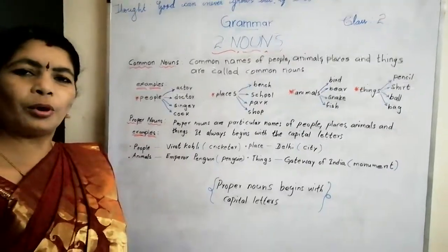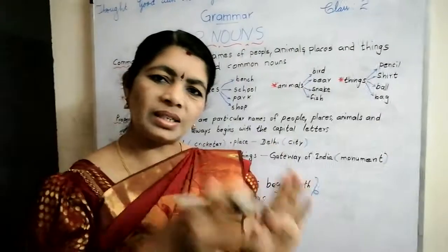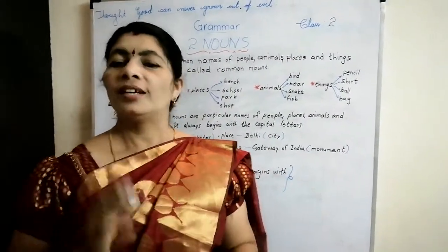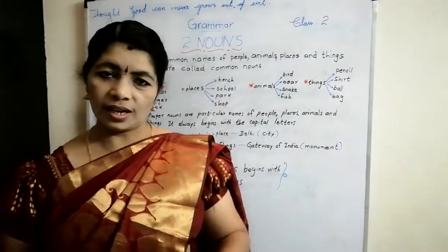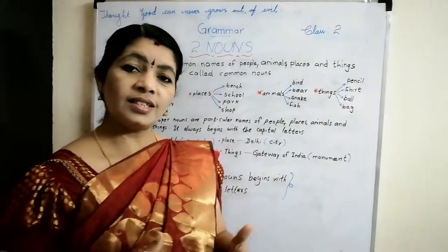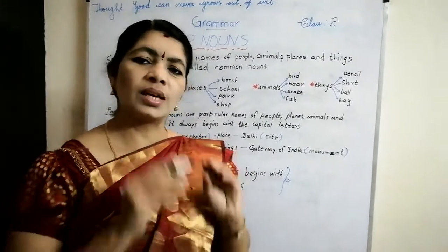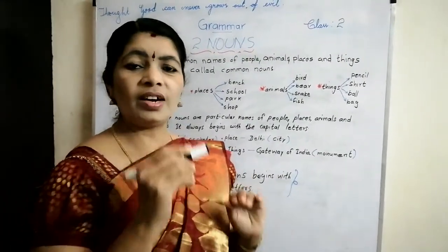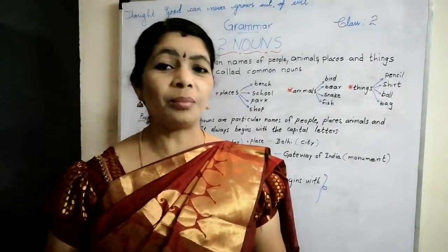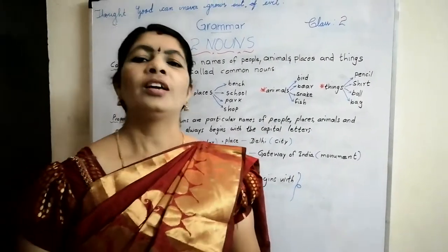Now let us learn about proper nouns. Proper nouns are nouns that we use for a particular person, place or animal — we give a particular name for that. That is a proper noun. For example: Sita, Mount Everest, River Yamuna. These are all proper nouns. The thing you have to remember is the proper noun always begins with capital letters.